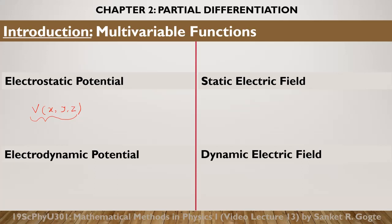Similarly, consider the second case: electrodynamic potential. Suppose the charge distribution from the first case is now a function of time — it depends on time. Then the potential due to that charge distribution will change with time; it will now be a function of time and of course a function of space. So this electrodynamic potential, dynamic because it is changing with time, is a function of four variables x, y, z, and t, where each variable is independent of the others. This again is a multivariable function with four independent variables.